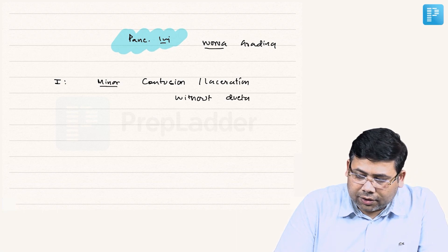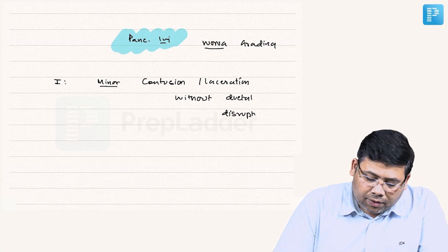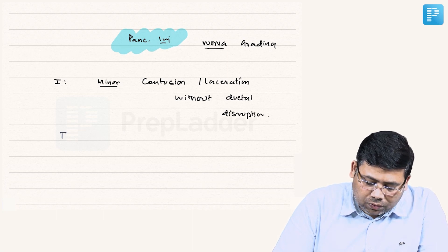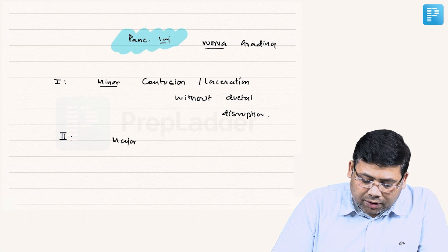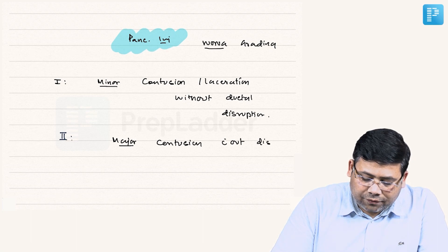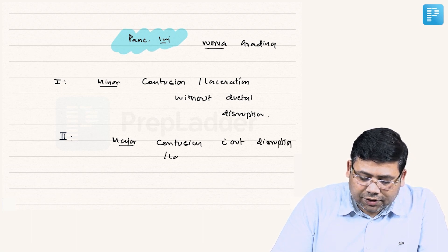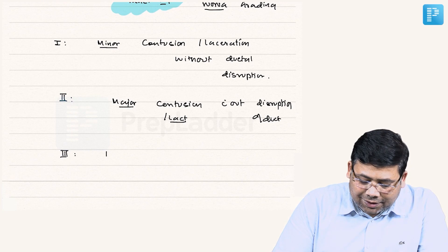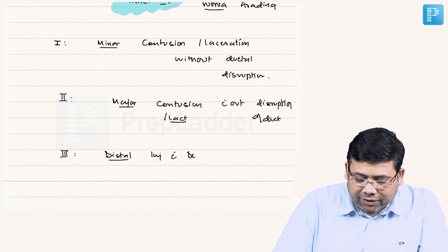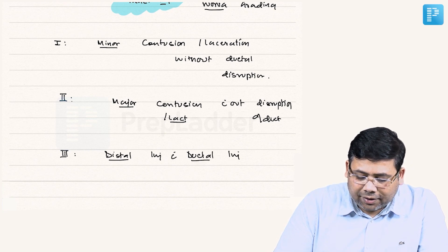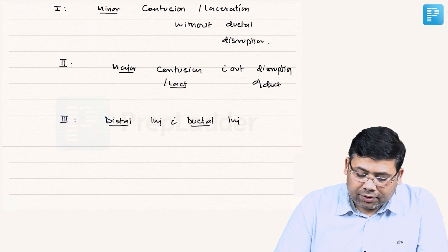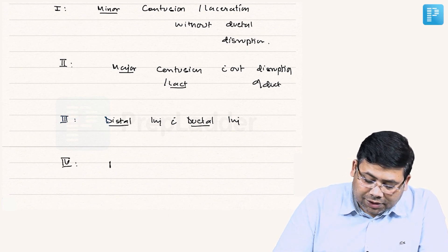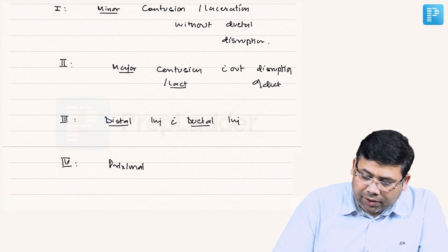Grade two is major contusion without disruption or laceration without ductal disruption or duct. Grade three is distal transaction or distal injury with ductal disruption. That's a distal pancreatic injury with distal ductal injury.